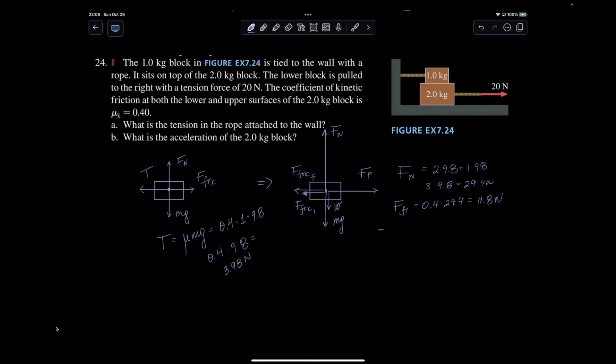We need, what is the acceleration of the two kilogram log? So net force is going to be 20 minus 11.8, which is my force of friction between the floor and the block, plus 3.98, which is the force of friction between the two kilogram object and the one kilogram object, 4.22 newtons.